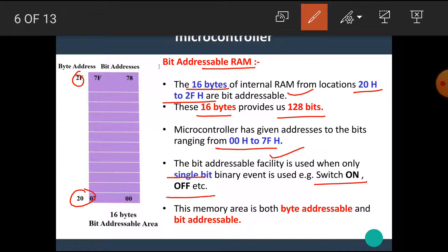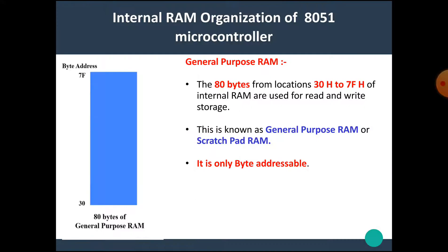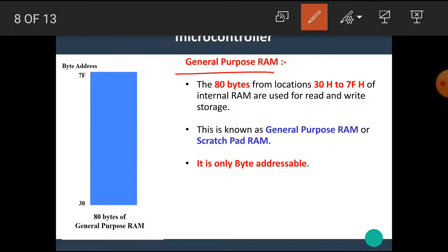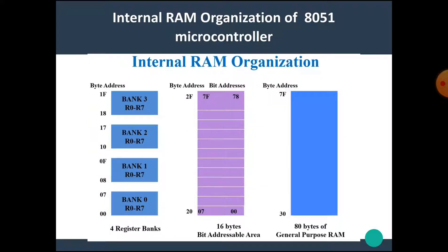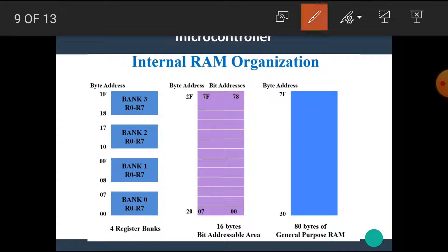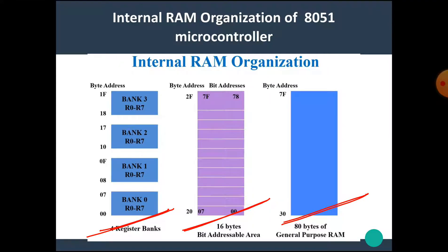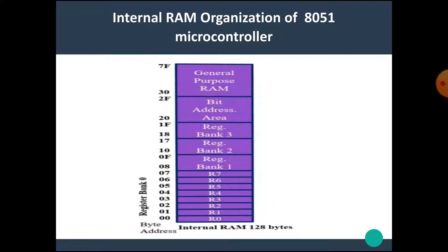The bit addressable facility is used only when a single bit binary event is used, for example, switch on or switch off purposes. This memory area is both byte addressable and bit addressable. The 80 bytes from locations 30H to 7FH of internal RAM are used for read and write storage. This is also known as the general purpose RAM or the scratch pad RAM, and it is only byte addressable.